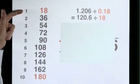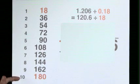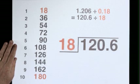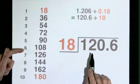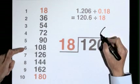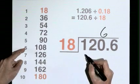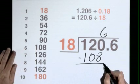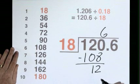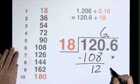Here's the 18 times table. Starts at 18, lands on 180. 18 goes into 120, 6 times. 6 eighteens are 108. Subtract to find the remainder. 12. Decimal point. Bring down the 6.